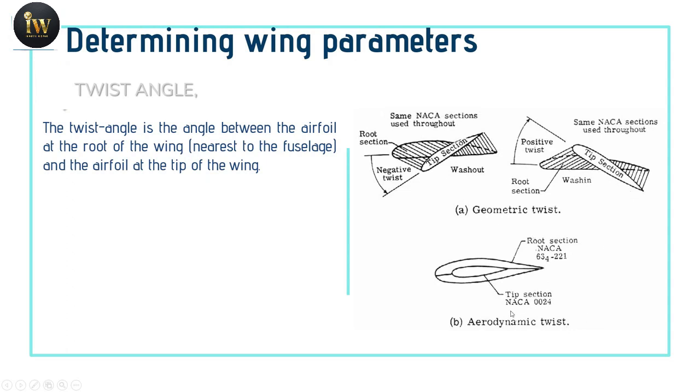Wash out means when the root chord is at zero angle of attack and the tip is at negative angle of attack, such phenomena gives a wash out twist, keeping in mind both airfoils are of the same NACA series.